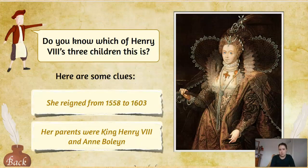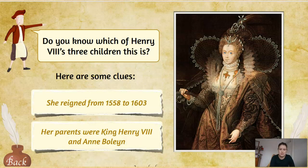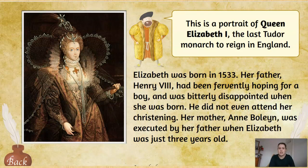Here is a portrait with two clues. This woman reigned from 1558 to 1603, and her parents were King Henry VIII and Anne Boleyn. Which of Henry VIII's three children do you think that portrait is? Pause the video and have a think. This is actually a portrait of Queen Elizabeth I — she was the last reigning Tudor monarch of England.